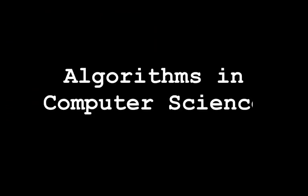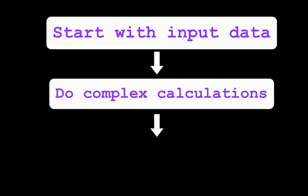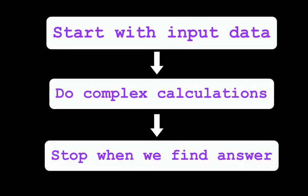In computer science, an algorithm is a set of steps for a computer program to accomplish a task. Algorithms put the science in computer science, and finding good algorithms and knowing when to apply them will allow you to write interesting and important programs.